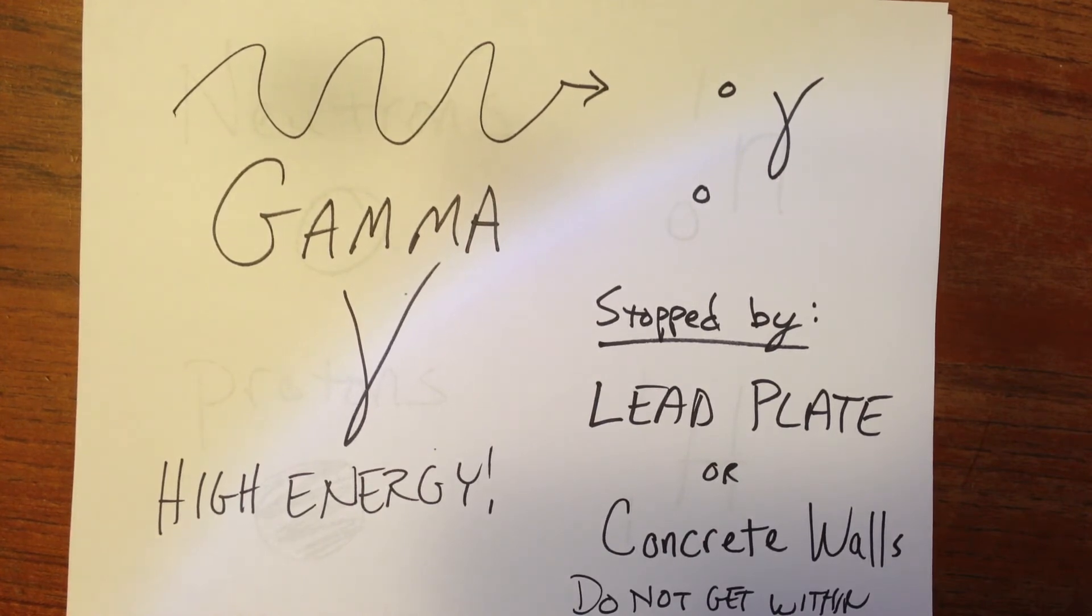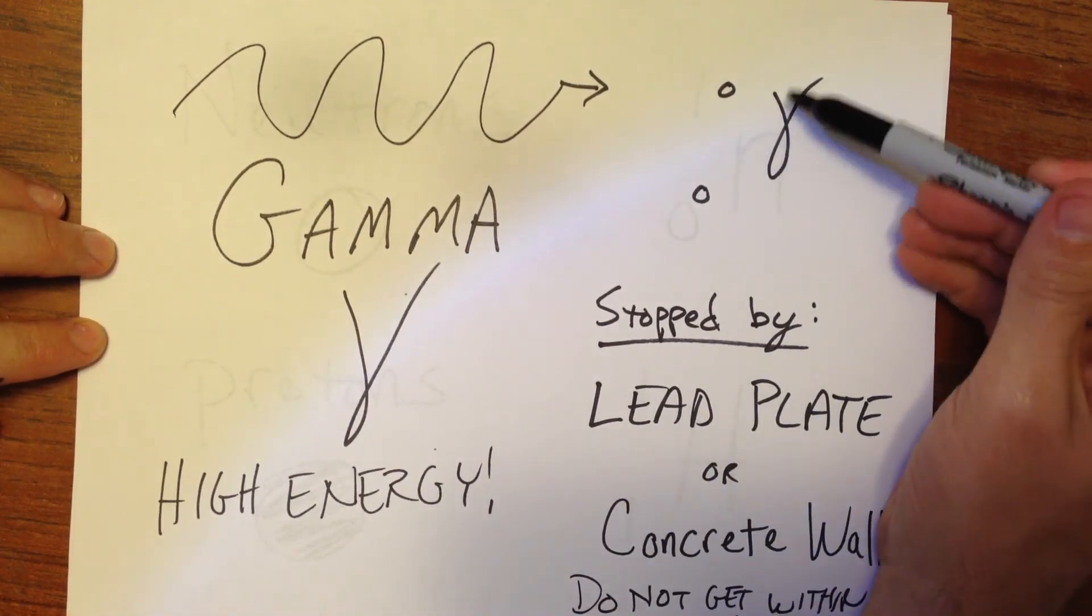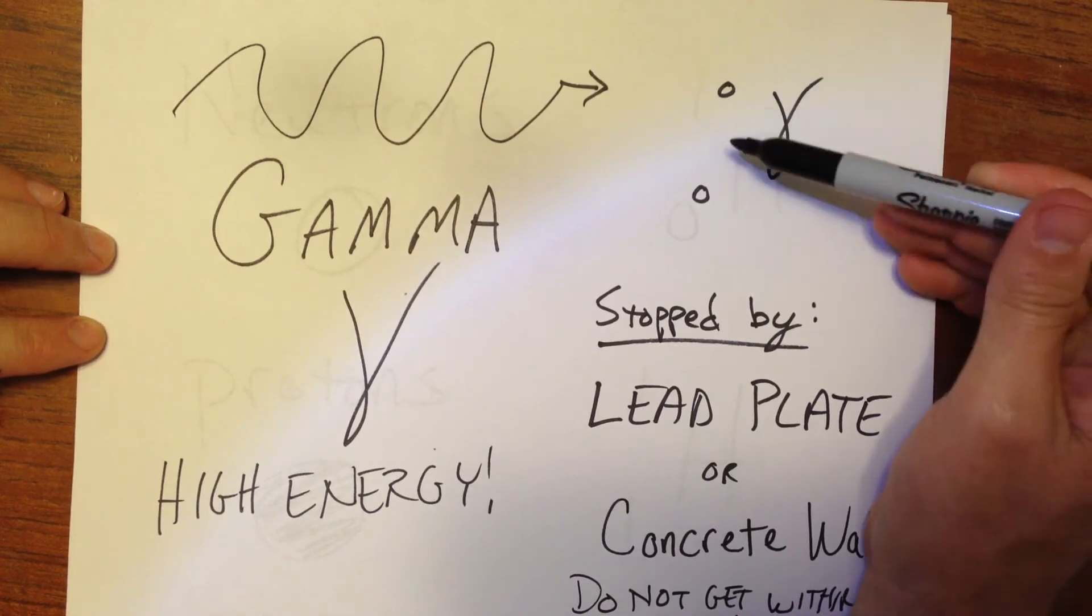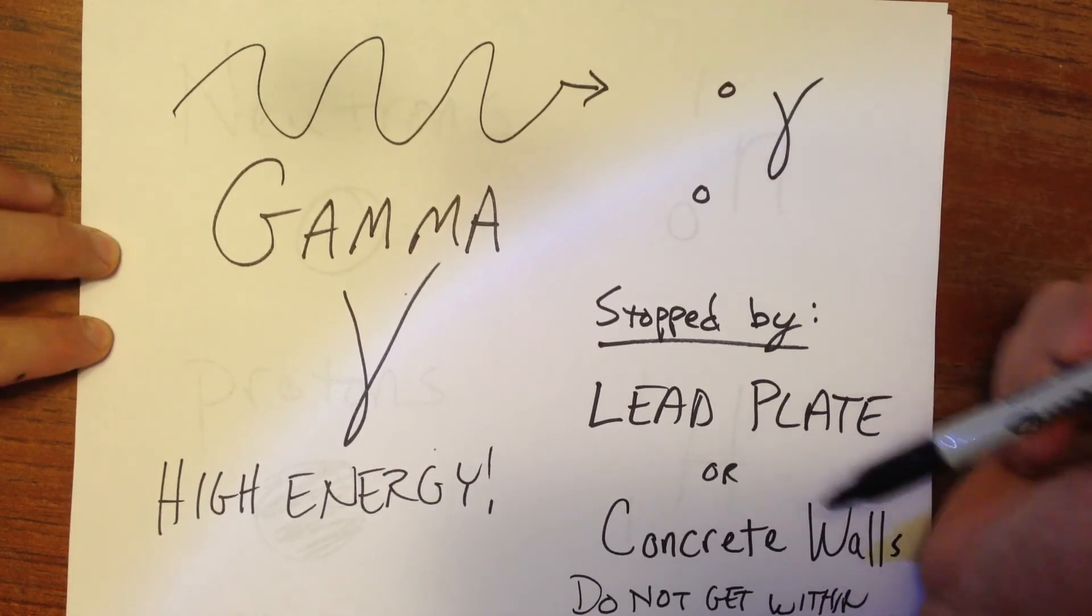And the symbol that we give for it is this gamma symbol, the Greek gamma symbol. And it has no charge and no mass, so it would get a 0 and a 0.